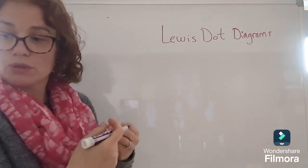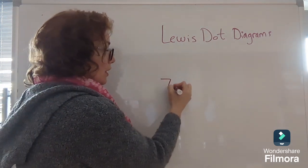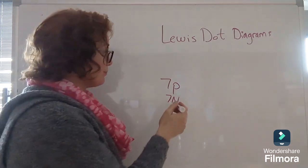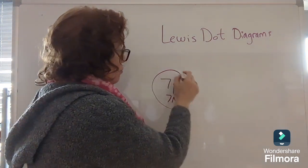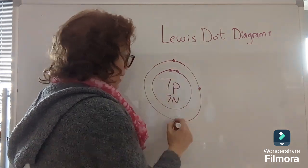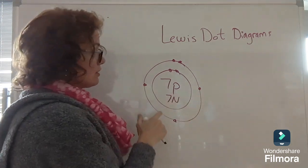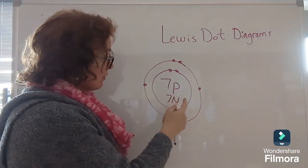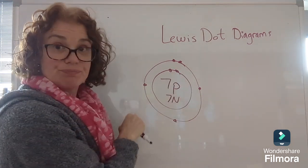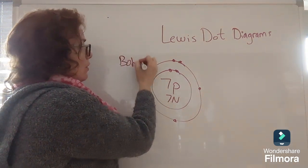With the Bohr model, if we were drawing something like the element nitrogen, we would list the protons and the neutrons in the nucleus of the atom. We do not draw the nucleus, but we draw the electrons in energy levels surrounding the nucleus, and we draw in all of the electrons. So because nitrogen has seven protons, it has seven electrons: one, two, three, four, five, six, seven. So this is the Bohr model of the atom.